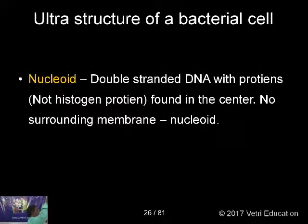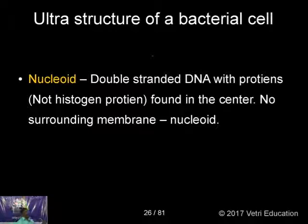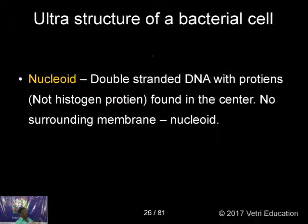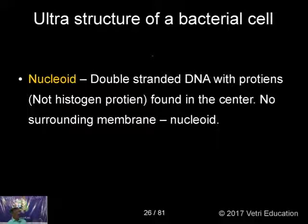The nucleoid is the nuclear region of bacteria. A true nucleus has a nuclear membrane, endoplasmic reticulum, and nucleoli — none of these are present here. The DNA floats in the cytoplasm; there is no nuclear membrane, so it is called nucleoid — nucleus-like structure. It is double-stranded DNA. An important character is that there are no histone proteins associated with it. It is found at the center with no surrounding membrane.